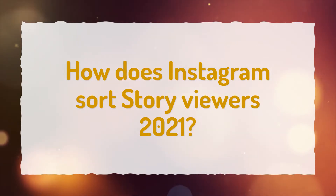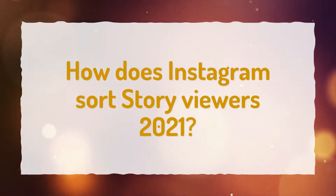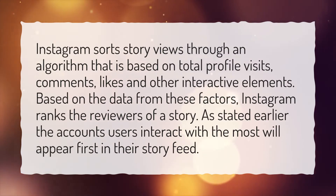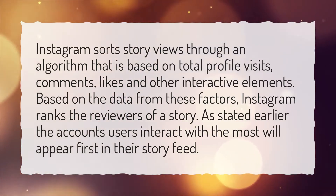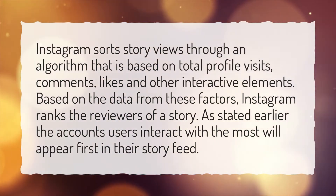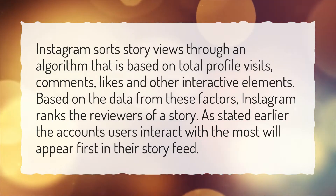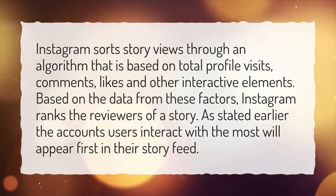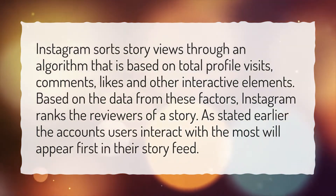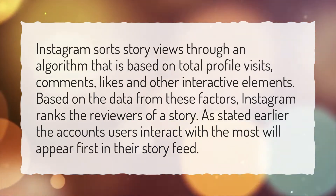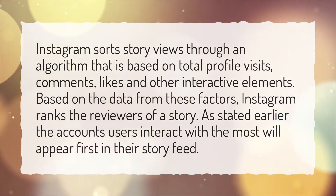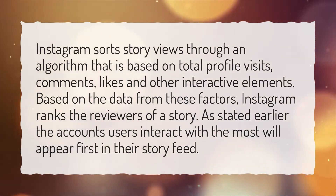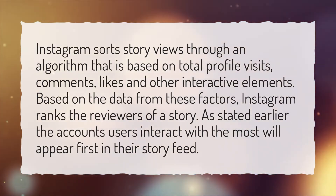How does Instagram sort story viewers 2021? Instagram sorts story views through an algorithm that is based on total profile visits, comments, likes, and other interactive elements. Based on the data from these factors, Instagram ranks the viewers of a story. The accounts users interact with the most will appear first in their story feed.